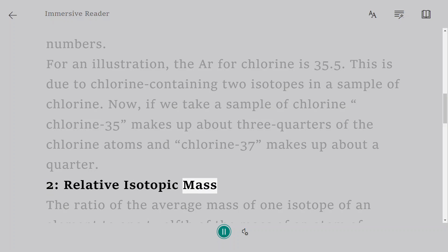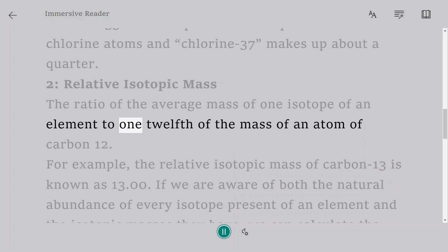Relative Isotopic Mass: The ratio of the average mass of one isotope of an element to one-twelfth of the mass of an atom of carbon-12. For example, the relative isotopic mass of carbon-13 is known as 13.00.